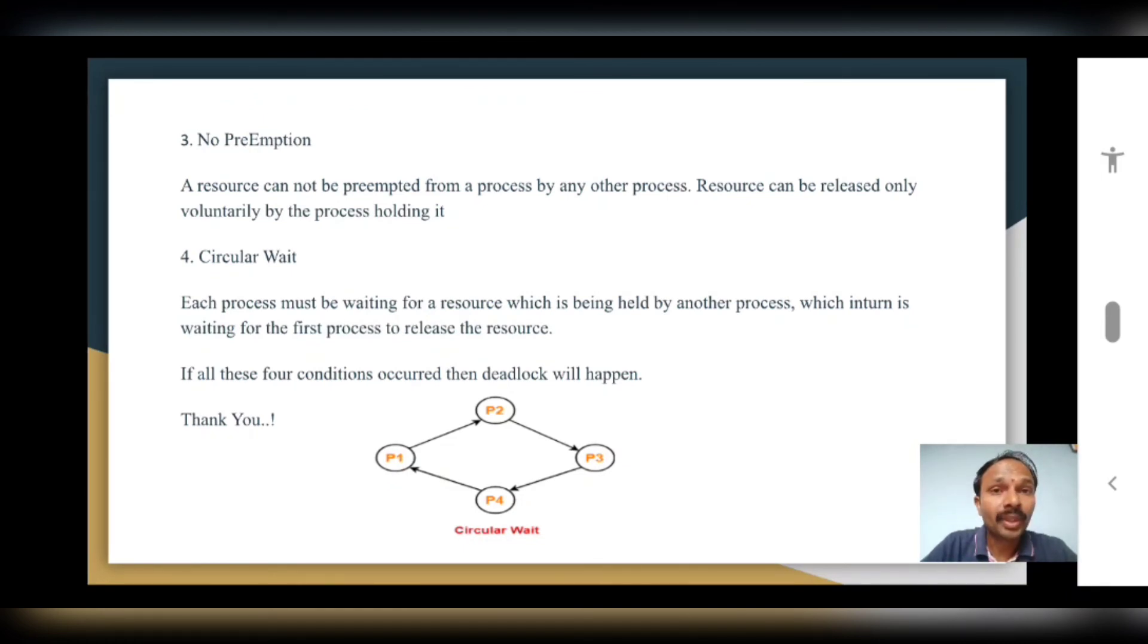Now what will happen? A resource cannot be preempted from a process by any other process. Resource can be released only voluntarily by the process holding it. So there will not be any preemption. The process which is running should run continuously till completing its timestamp. Now this is 75 percent completion of the deadlock.